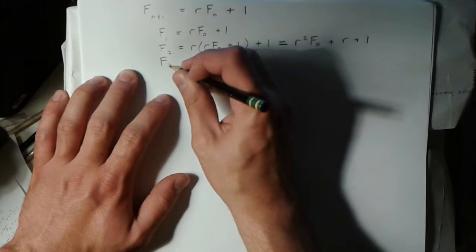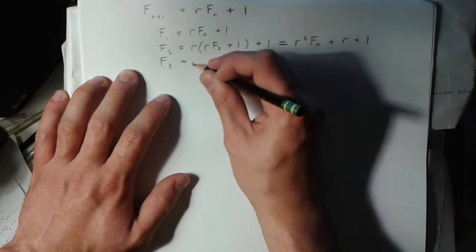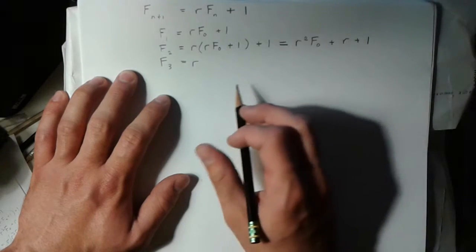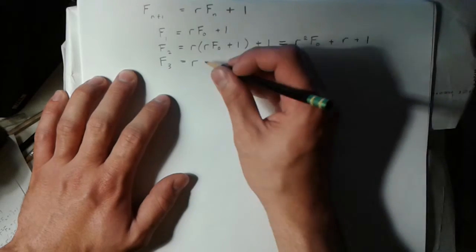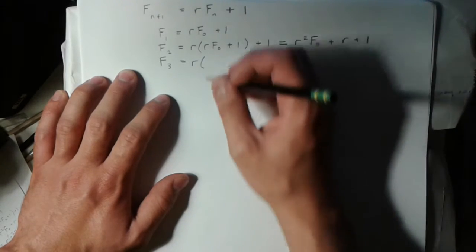Now when I do the third one, now I have r times the previous term plus 1. Now I have the choice of either plugging this in or plugging this in for the previous term. And I think I'm going to go with the expanded term here.